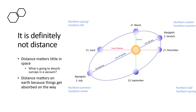People often misunderstand seasons as being related to Earth's distance from the sun, but that wouldn't make sense — it's winter in one place and summer in another simultaneously. If winter were caused by being far from the sun, why would the southern hemisphere be in summer at the same time the northern hemisphere is in winter? It really has to do with the angle, not the distance.